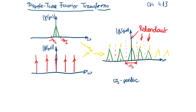But if we look at this spectrum, we see a lot of redundant information here. In this part there is the same information as in this and this and this and so on. This is because the spectrum is periodic with the periodicity of the sampling frequency.